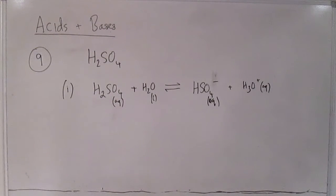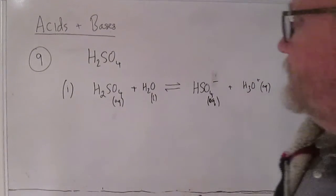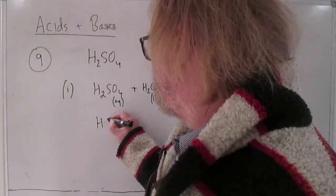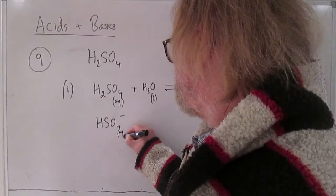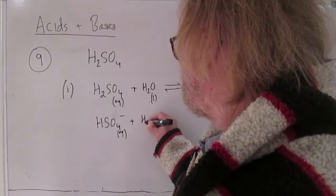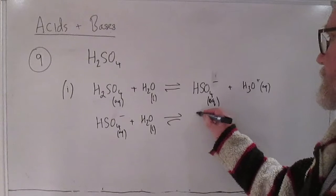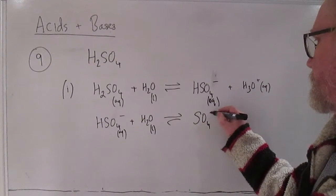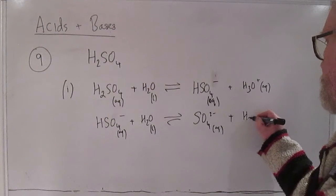So HSO4 minus can then go on and lose the second proton. So we get HSO4 minus reacting with another water to give you sulfate plus second proton.